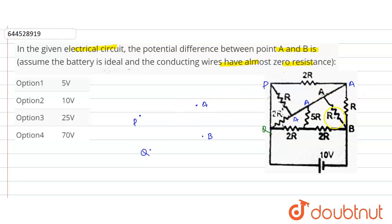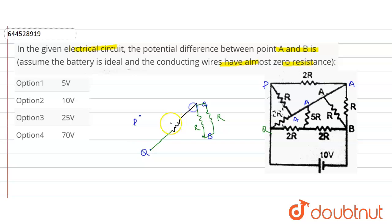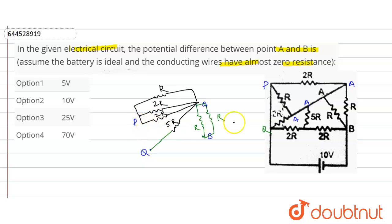Here, A and B are connected with R two times in parallel. This R and this R are both connected. Now, this 5R is connected with Q. From A to P, 2R is connected directly, and this R is connected in parallel. Again, this 2R is connected in parallel, and here another 2R is connected.